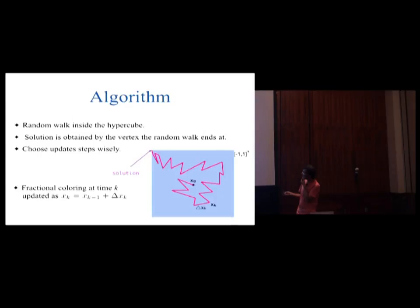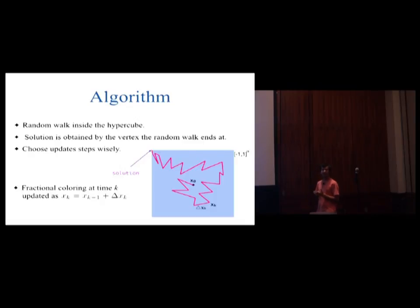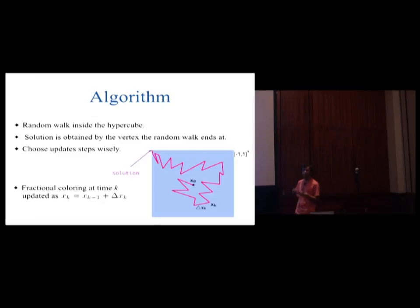I use x_k to refer to the position of the random walk at time step k, which is also the fractional colouring of all the points at time step k. Delta x is the update step taken. Previous algorithms for discrepancy which made partial colouring constructive also performed a similar random walk, where morally each update step was chosen uniformly at random. But now, to get over the obstacle that partial colouring had, we demand that our update steps satisfy some special properties instead of being totally random.